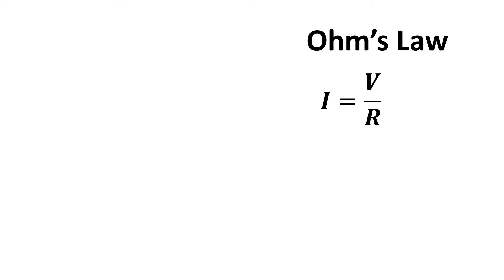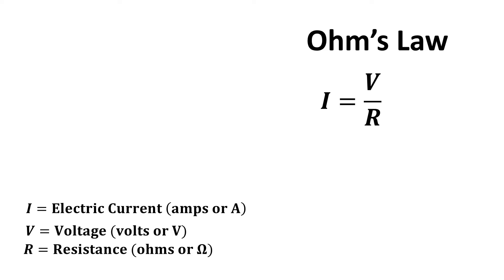Ohmic heating. We need to understand Ohm's law before explaining Ohmic heating of foods. Ohm's law states that the current flowing through a conductor or resistor is directly proportional to the applied voltage — that is, I equal to V by R — where I is the current in amps (A), V is the voltage in volts (V), and R is the resistance in ohms.